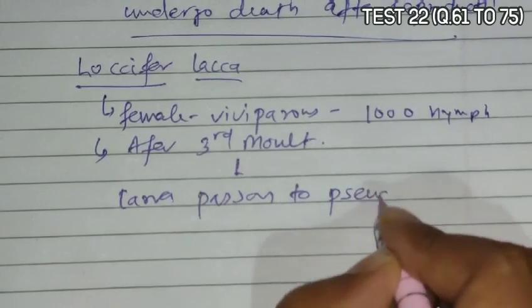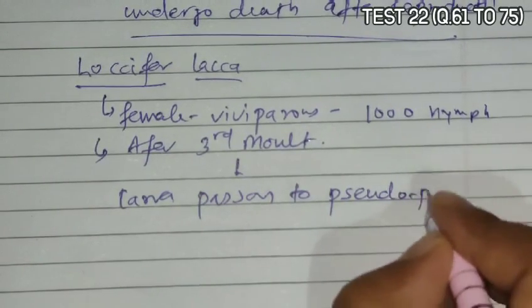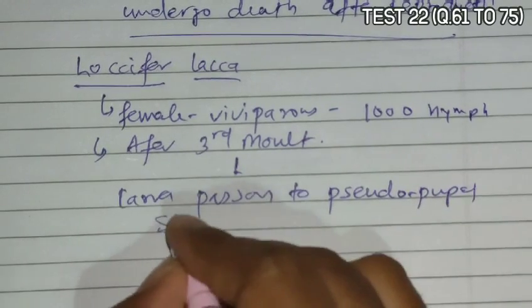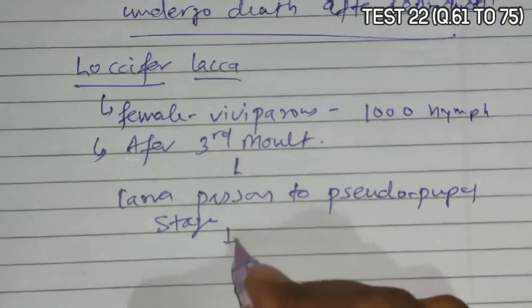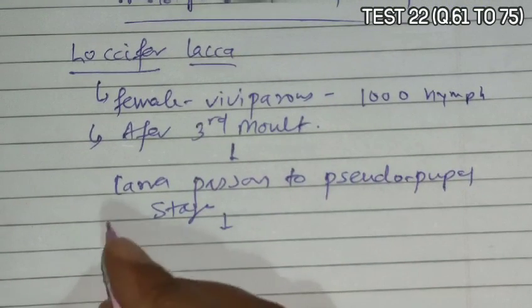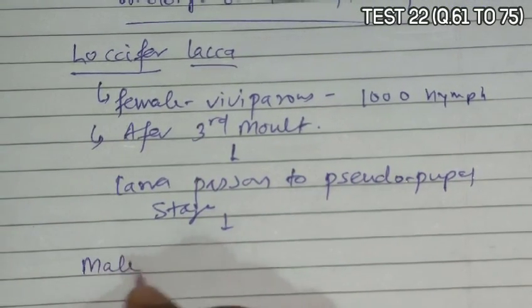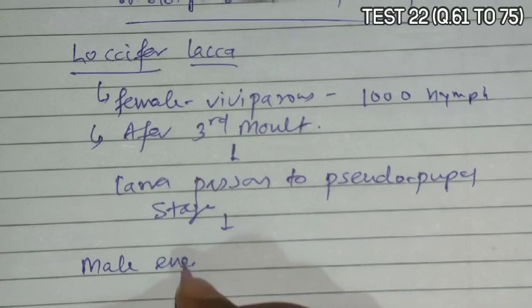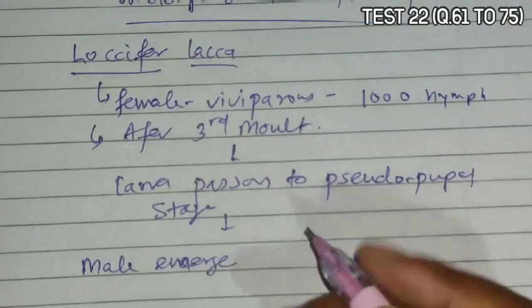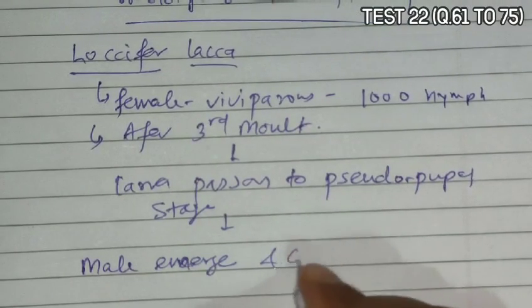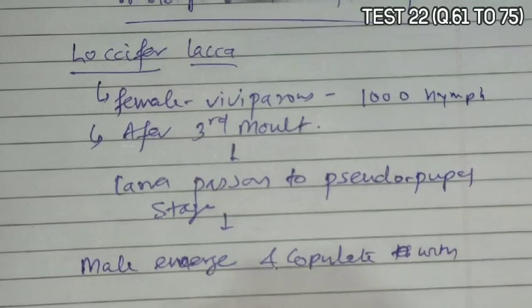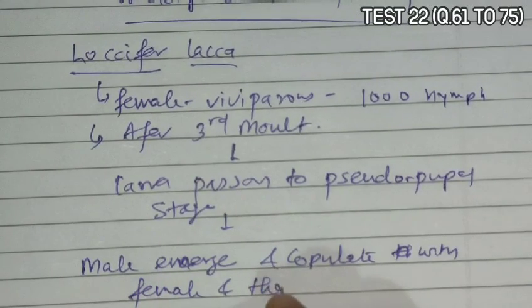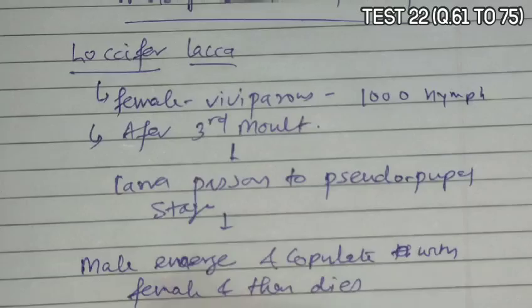After the third molt, the larvae pass on to the pseudo-pupal stage. The male emerges, copulates with the female, and then dies. So the male dies after reproduction.